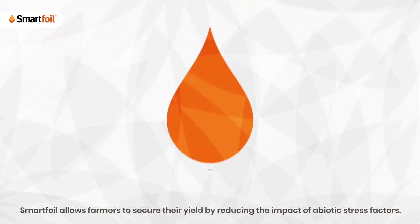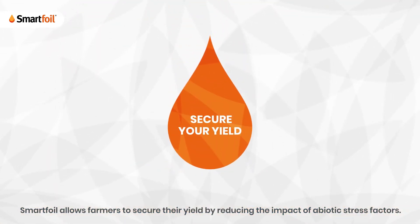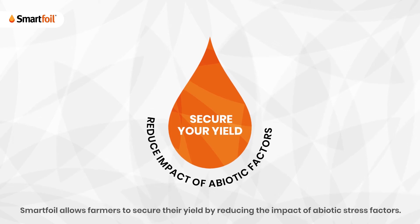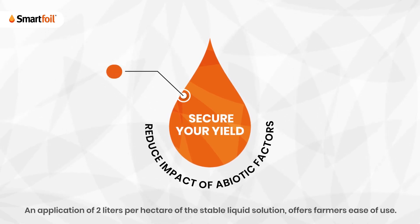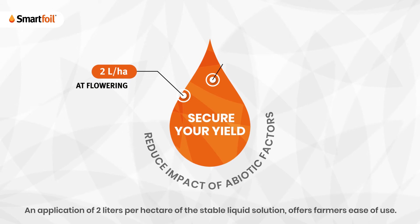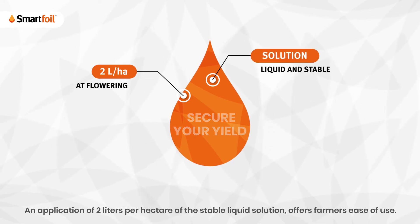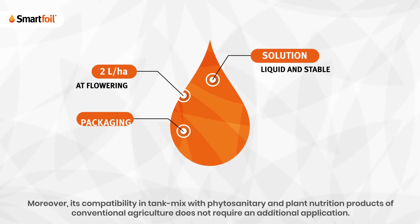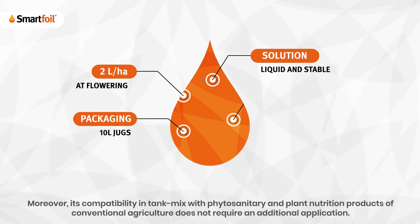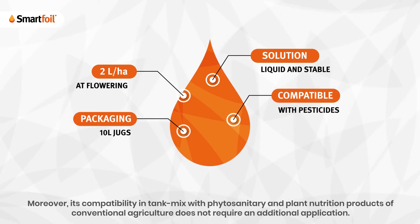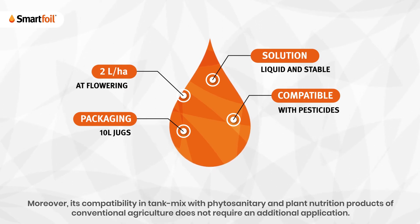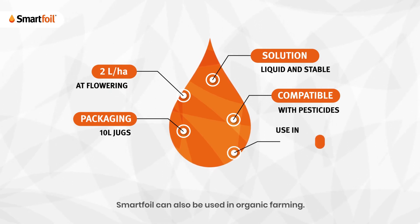SmartFoil allows farmers to secure their yield by reducing the impact of abiotic stress factors. An application of two liters per hectare of the stable liquid solution offers farmers ease of use. Moreover, its compatibility in tank mix with phytosanitary and plant nutrition products of conventional agriculture does not require an additional application. SmartFoil can also be used in organic farming.